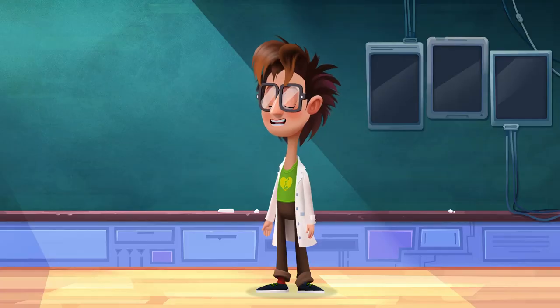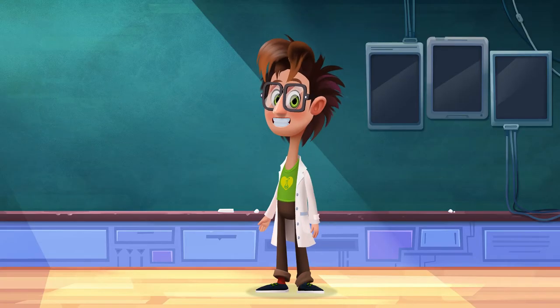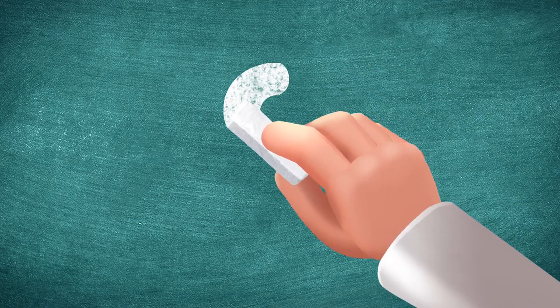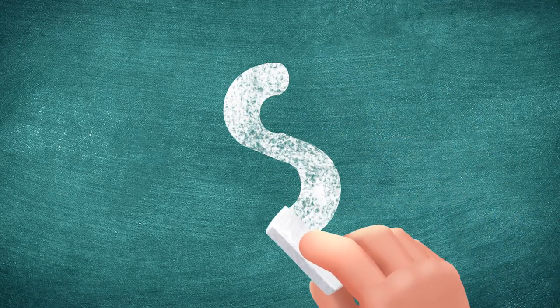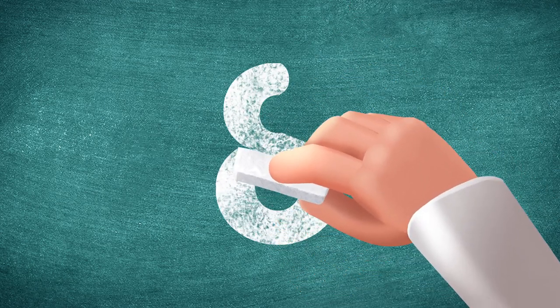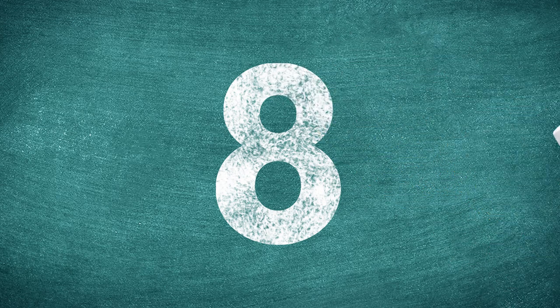How do we write the number eight? The number eight looks like a snake. Start at its head, go down, draw a loop, and come back up. This is the number eight. It means eight of something.